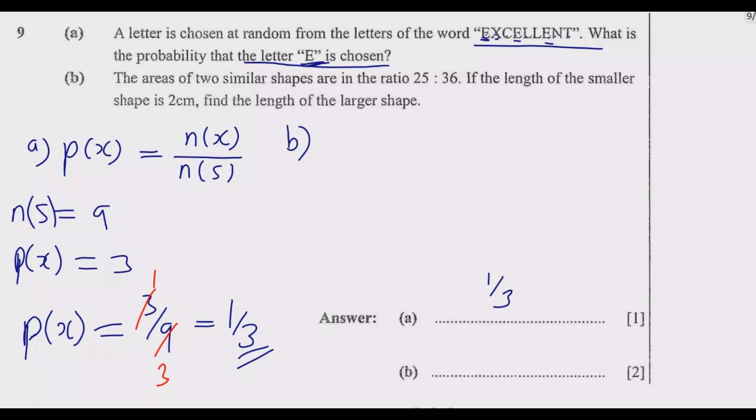Question B: The areas of two similar shapes are in the ratio 25 to 36. If the length of the smaller shape is 2 centimeters, find the length of the larger shape. When you are given the ratio of areas, you are dealing with squares.